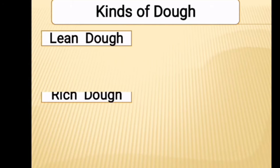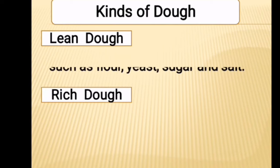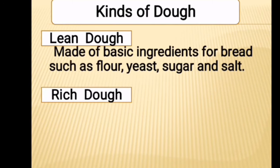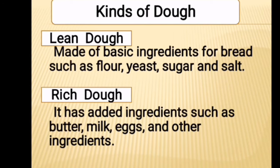Kinds of Dough. There are two kinds of dough used in making bread: Lean Dough and Rich Dough. Lean dough is made of basic ingredients such as bread flour, yeast as the leavening agent, sugar, and salt. For rich dough, aside from the basic ingredients, it has added ingredients such as butter, milk, eggs, and other ingredients.